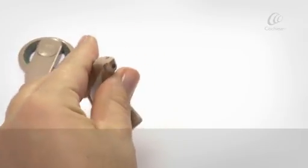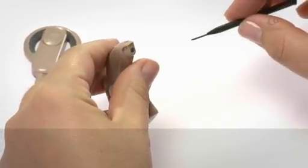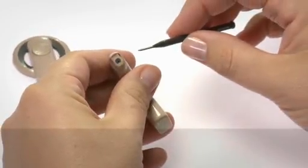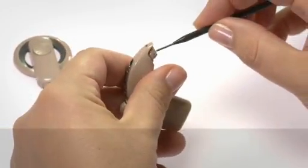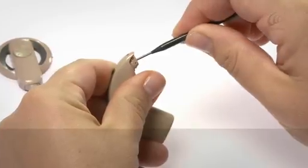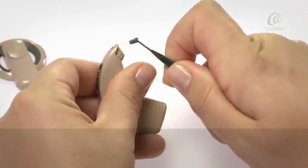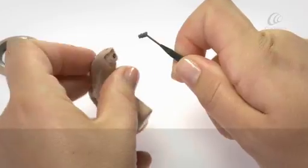Insert a Cochlear EAC 200 series screwdriver into the hole in the processor unit plug. Use the screwdriver to carefully remove the plug and discard.